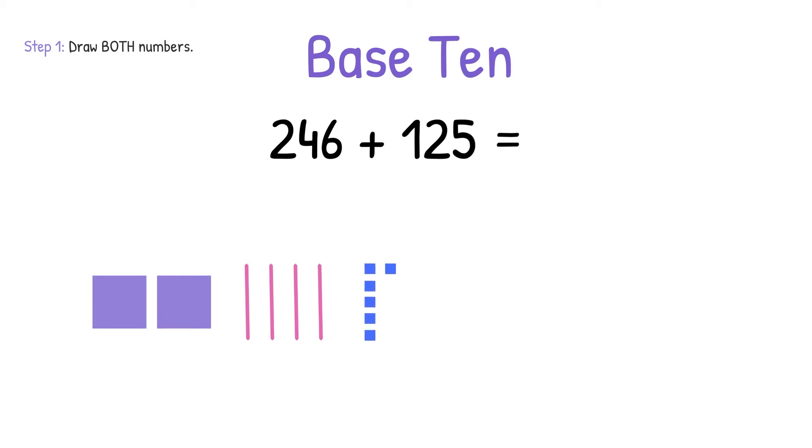We'll draw 125 using 100, 2 tens, and 5 ones. Step 2, always start adding with the ones. We have to ask ourselves, can I make a new ten? If I can make a ten, I'm going to go ahead and do that now. If I cannot, I'm going to move on to Step 3.